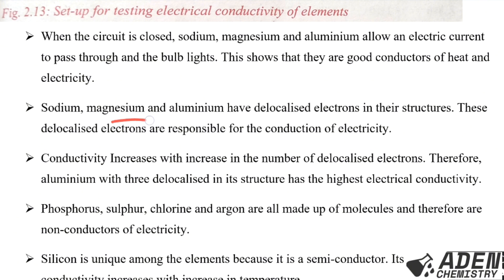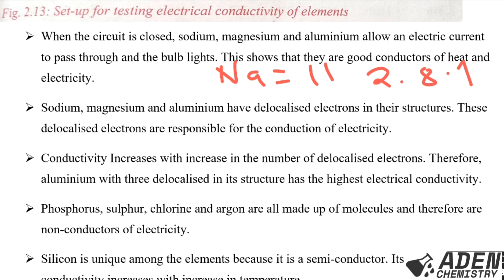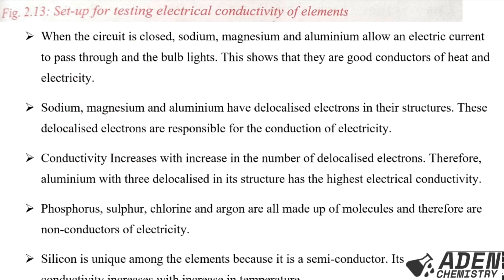Sodium, magnesium, and aluminium have localized electrons in their structure, and these localized electrons are responsible for the conduction of electricity. To know whether an element has localized electrons, you need to know its atomic number and write its electronic configuration. For example, sodium has atomic number 11 with electronic configuration 2, 8, 1. If the last energy level has one, two, or three electrons, the element has localized electrons.